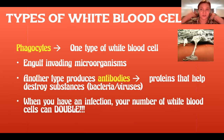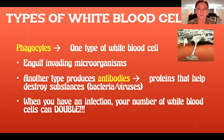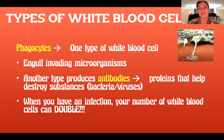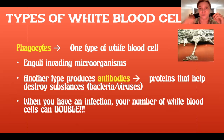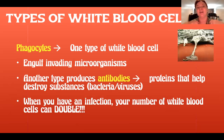Another type of white blood cell — not a phagocyte — that you'll learn about in the chapter on the immune system, are called B cells. They produce antibodies. Antibodies are proteins that help destroy substances, particularly viruses, because viruses can't reproduce unless they attach to your cell and insert their DNA into it. So antibodies are part of the protein defense against allowing a virus to attach to your cell.